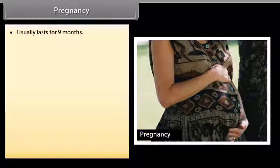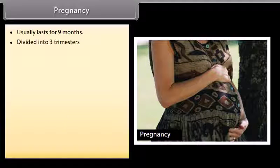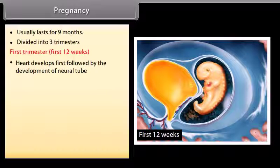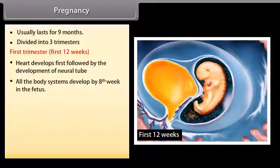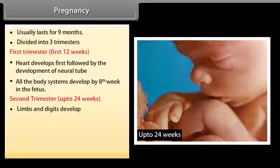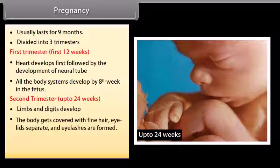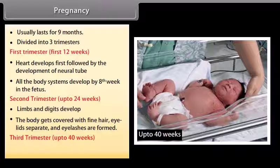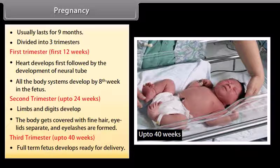Pregnancy usually lasts for nine months and is divided into three trimesters. In the first trimester, the first twelve weeks, the heart develops first, followed by the development of the neural tube, and all body systems develop by the eighth week. In the second trimester, up to twenty-four weeks, limbs and digits develop, the body gets covered with fine hair, eyelids separate, and eyelashes are formed. In the third trimester, up to forty weeks, the full-term fetus develops and is ready for delivery.